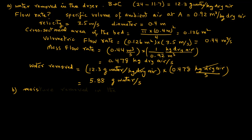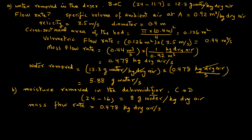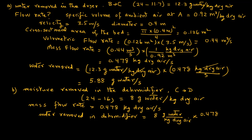For part B, the moisture removed in the dehumidifier is the C to D process. From the psychrometric chart the humidity ratios are 24 for C and 16 for D, so 24 minus 16 equals 8 grams of water per kilogram of dry air. We have already calculated the mass flow rate as 0.478 kilograms of dry air per second. So the water removed in the dehumidifier is 8 × 0.478 = 3.82 grams of water per second as our answer for part B.